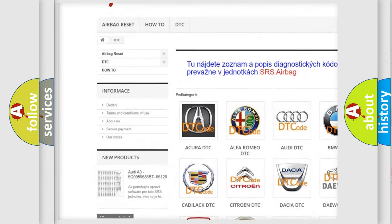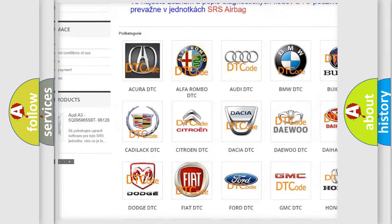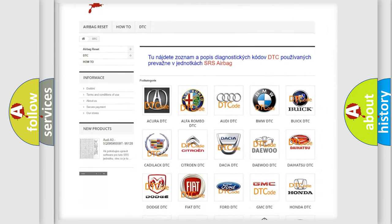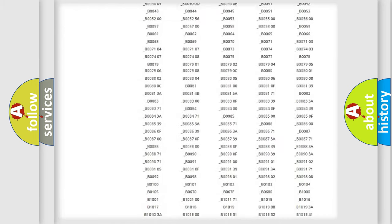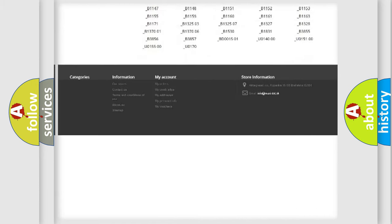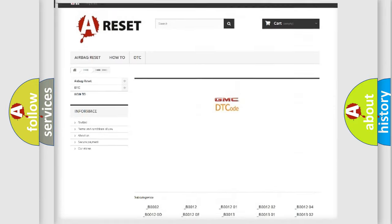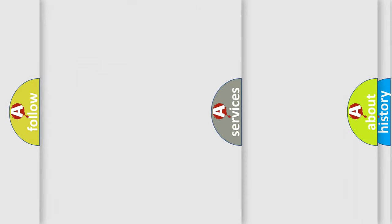Our website airbagreset.sk produces useful videos for you. You do not have to go through the OBD2 protocol anymore to know how to troubleshoot any car breakdown. You will find all the diagnostic codes that can be diagnosed in GMC vehicles, and many other useful things.